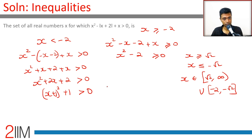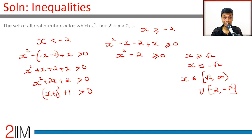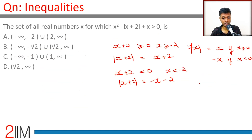Combining both cases: x less than minus 2 holds throughout, plus the range minus 2 to minus root 2, plus root 2 to infinity. Together, this gives us minus infinity to minus root 2, union root 2 to infinity. So the final answer is (-∞, -√2) ∪ (√2, ∞).